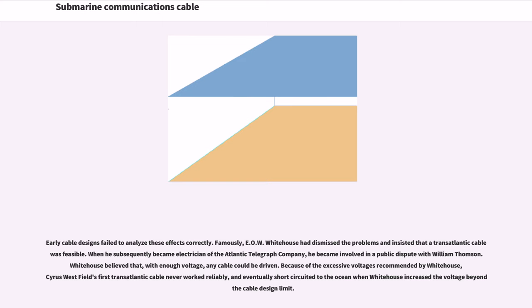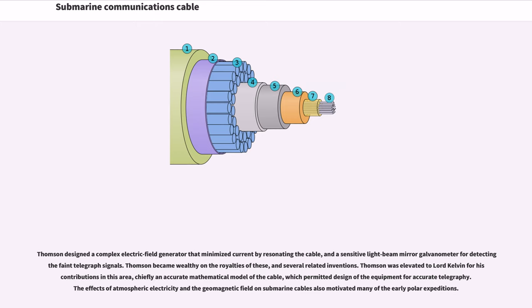E.O.W. Whitehouse had dismissed the problems and insisted that a transatlantic cable was feasible. When he subsequently became electrician of the Atlantic Telegraph Company, he became involved in a public dispute with William Thompson. Whitehouse believed that, with enough voltage, any cable could be driven. Because of the excessive voltages recommended by Whitehouse, Cyrus Westfield's first transatlantic cable never worked reliably, and eventually short-circuited to the ocean when Whitehouse increased the voltage beyond the cable design limit. Thompson designed a complex electric field generator that minimized current by resonating the cable, and a sensitive light-beam mirror galvanometer for detecting the faint telegraph signals. Thompson was elevated to Lord Kelvin for his contributions in this area, chiefly an accurate mathematical model of the cable which permitted design of the equipment for accurate telegraphy.